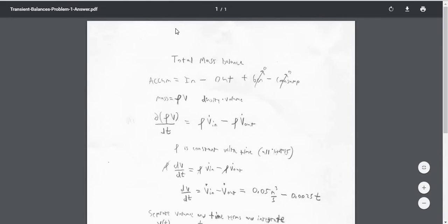What we're going to do is a total mass balance. The accumulation of water in the tank is going to be equal to whatever's coming in, minus whatever's coming out, plus whatever's generated or minus the consumption. Since this is total mass, you can't generate or consume total mass, so those are both zero.